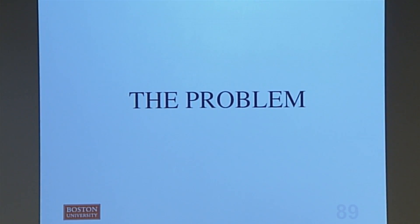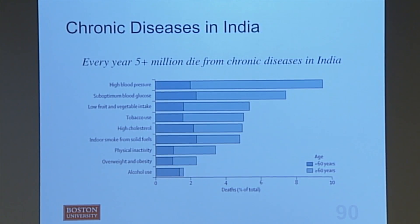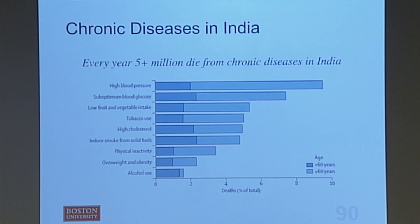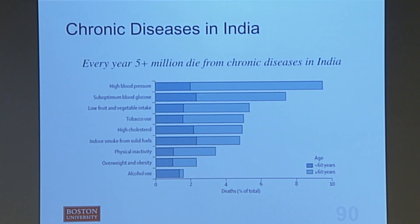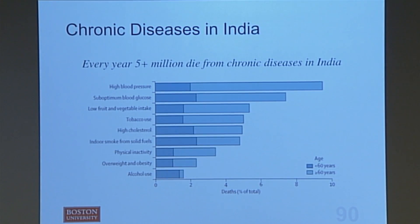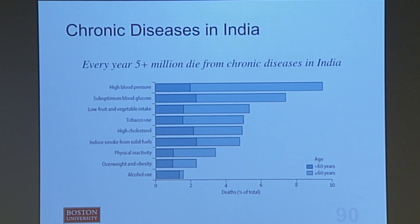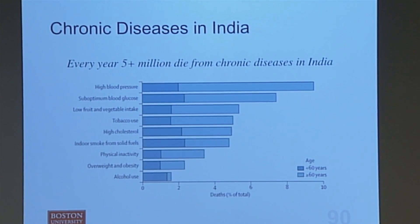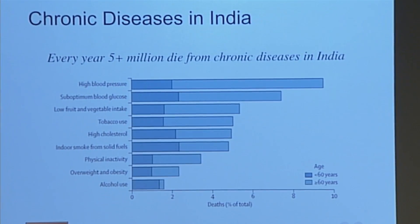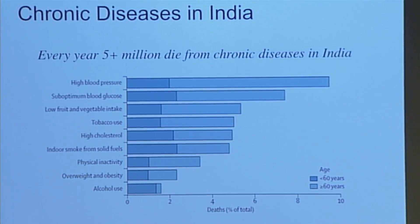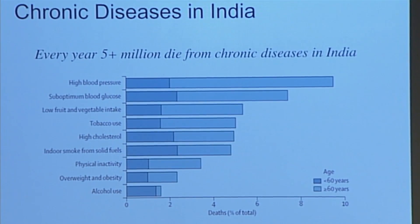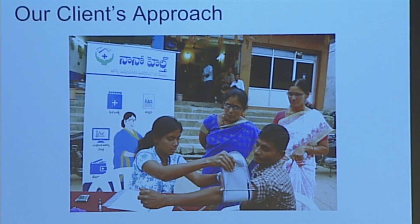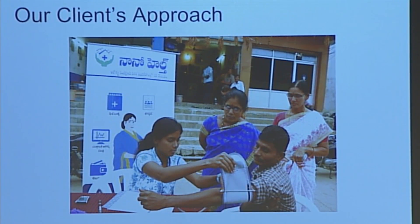The problem we are looking at is chronic diseases in India. Every year over five million people die from chronic diseases in India, and if you look at this chart, the two leading causes of death are complications due to high blood pressure and sub-optimum glucose. The risk of complications from these two conditions can really be mitigated if they're identified soon enough. Our client is looking at improving accessibility to basic healthcare in underserved communities in India.